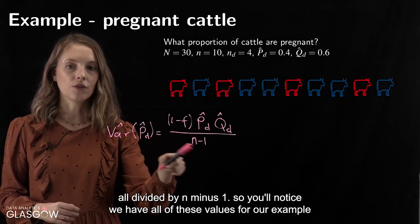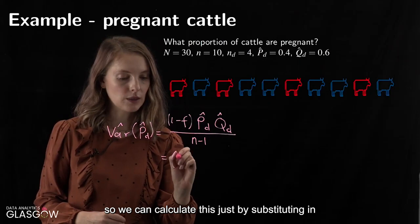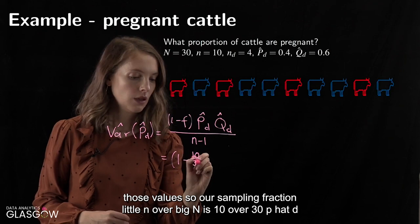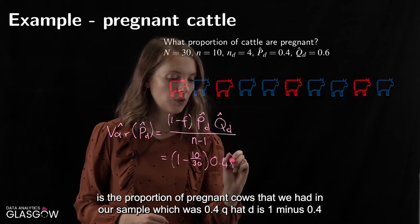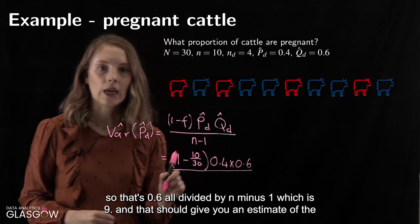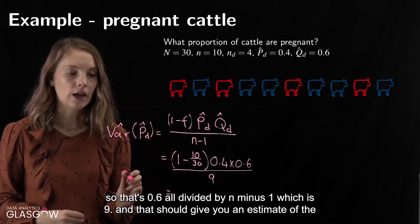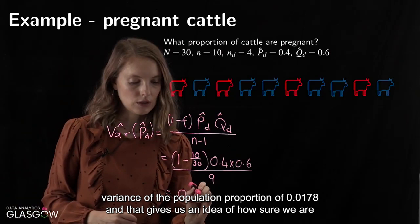We have all of these values for our example, so we substitute them in. The sampling fraction little n over big N is 10 over 30. P̂D is 0.4, Q̂D is 1 minus 0.4 = 0.6, all divided by n minus 1 = 9. That gives us an estimate of the variance of the population proportion of 0.0178, which tells us how certain we are about our estimate.